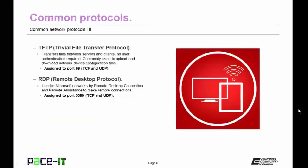Then there is TFTP, Trivial File Transfer Protocol. It transfers files between servers and clients with no user authentication and no encryption. It's commonly used to upload and download network device configuration files. It's assigned to port 69 and uses TCP and UDP. Then there is RDP, Remote Desktop Protocol — used in Microsoft networks by Remote Desktop Connection and Remote Assistance to make remote connections to desktop systems. It's assigned to port 3389 by default and also uses TCP and UDP.